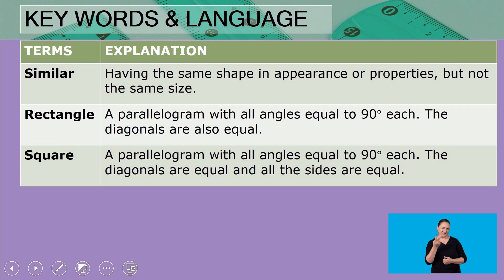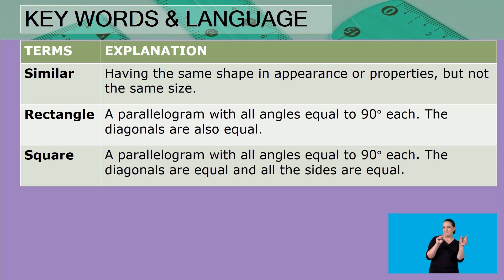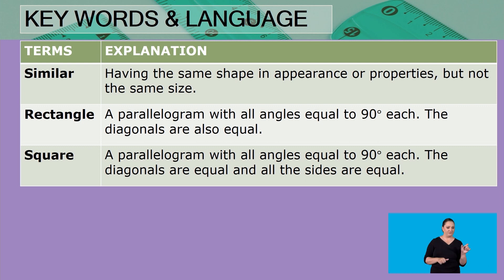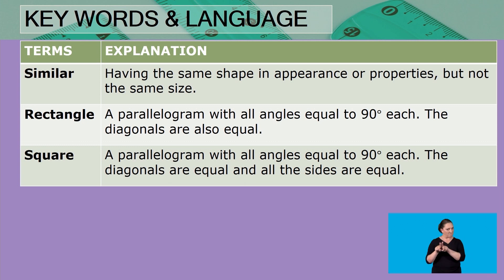Let's look at the key words for this lesson. Similar means having the same shape in appearance or properties but not the same size. A rectangle is a parallelogram with all angles equal to 90 degrees each, and its diagonals are also equal. A square is a parallelogram with all angles equal to 90 degrees each, with equal diagonals and all sides equal.